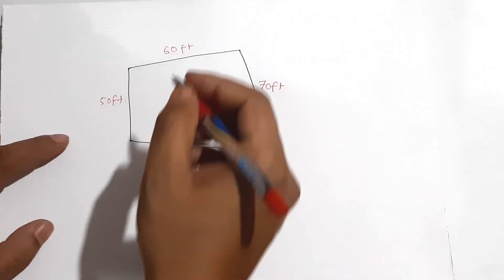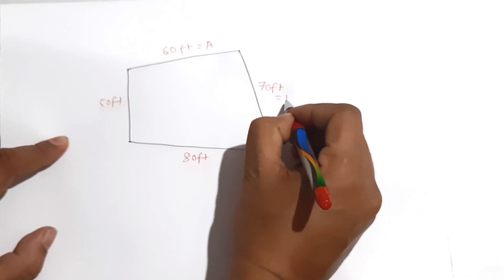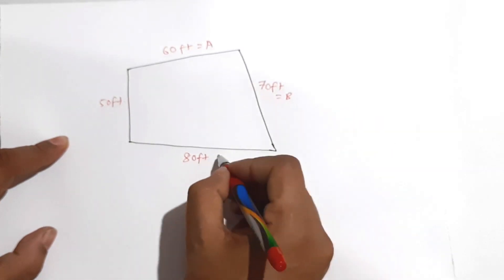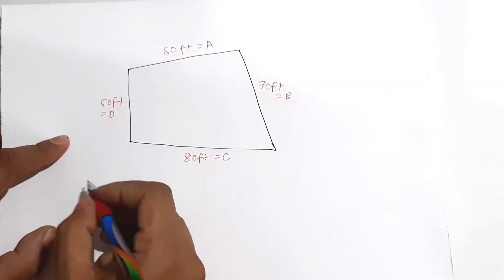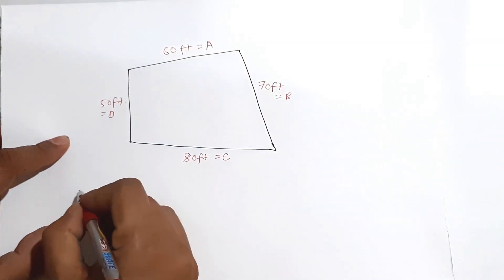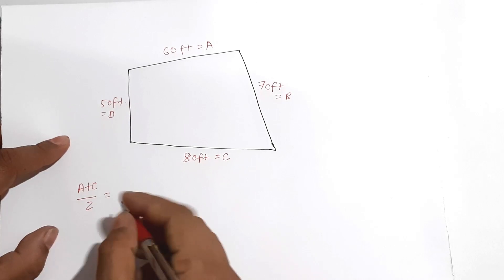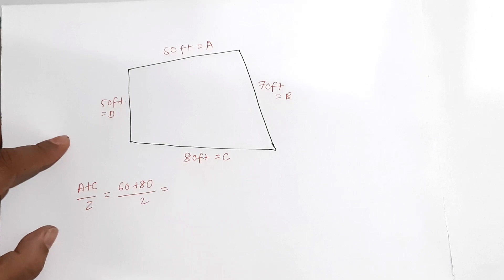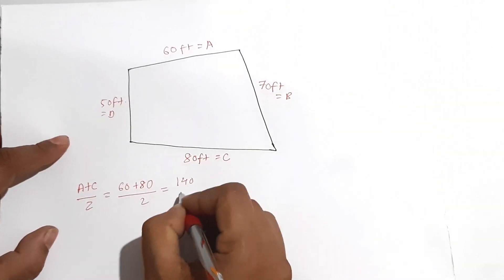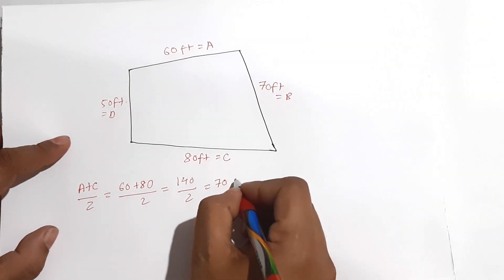So suppose now this 60 is equal A. Then 70 is equal B. Then 80 is equal C. And 50 is equal D. So what is the easy formula to calculate the square feet? A plus C by 2 equal 60 plus 80, 60 plus 80 divided by 2. It is 140 by 2 equals 70.